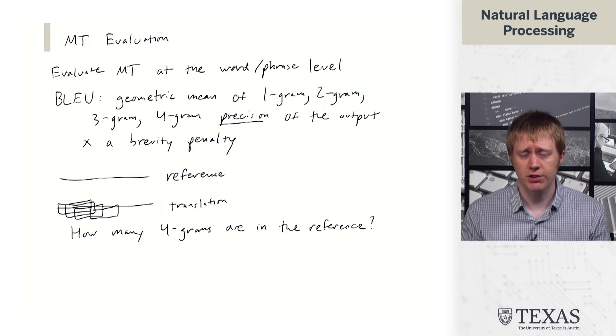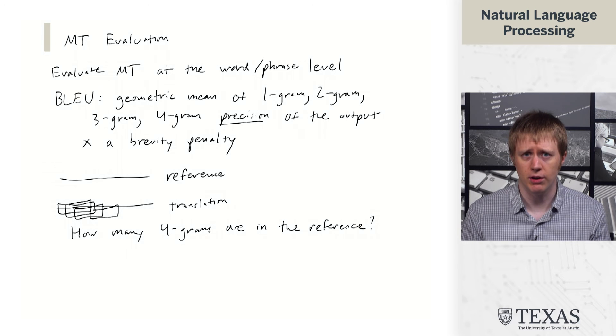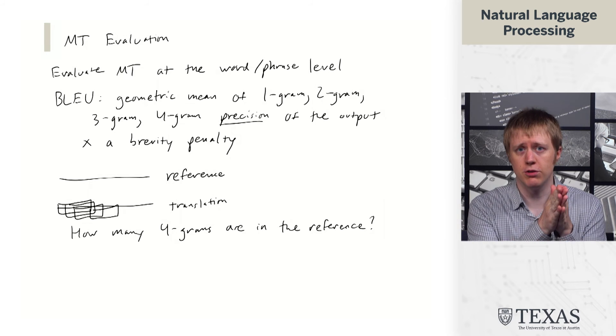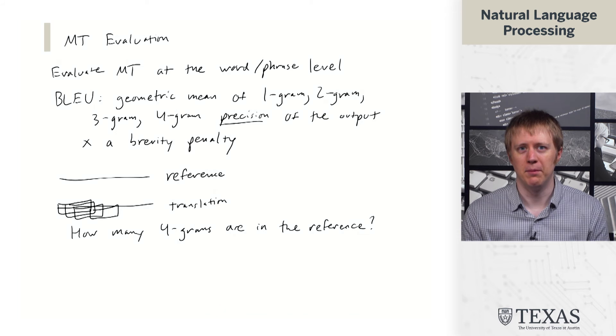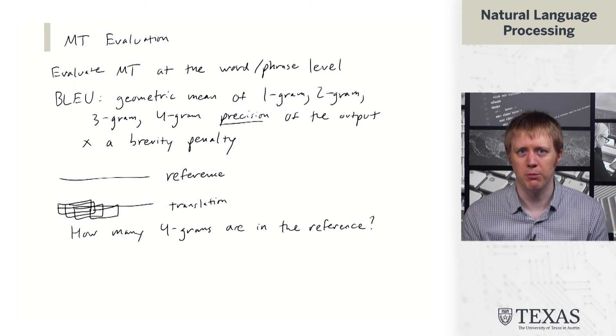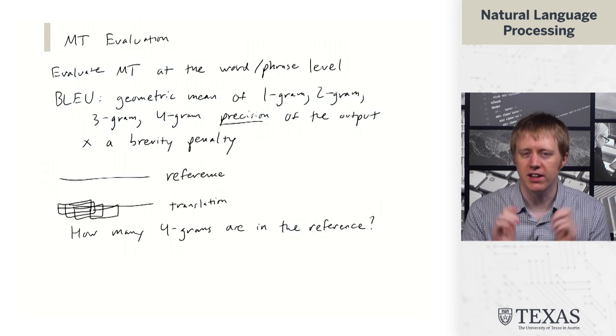And then we have a geometric mean across these different precisions. And then we also have what's called a brevity penalty, which basically penalizes translations which are too short. Otherwise, what you could do is you could just output four words you were very confident about and if that four-gram was correct, you would get 100% precision, but you wouldn't have translated most of the reference.